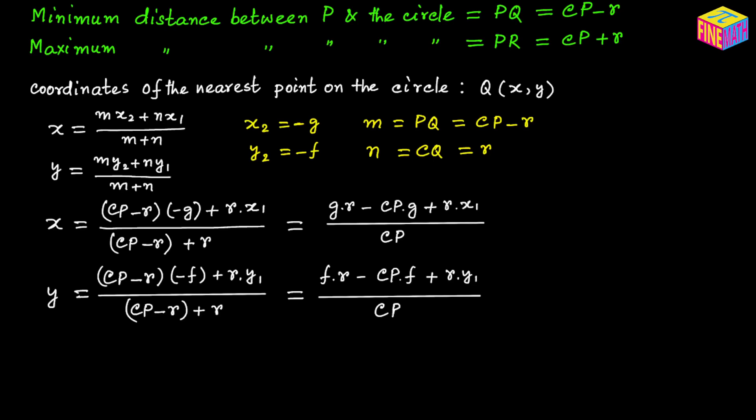Looking at these x and y coordinate values of point Q, we can see that we know the values of g, R, CP, x₁, y₁, and f. So we are able to easily calculate x and y — the coordinates of point Q, which is the nearest point on the circle from point P.